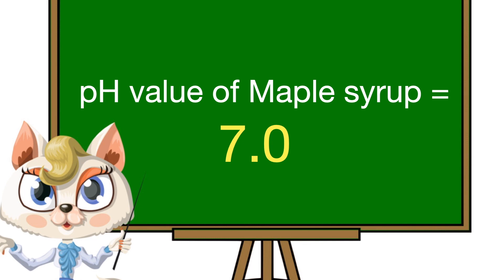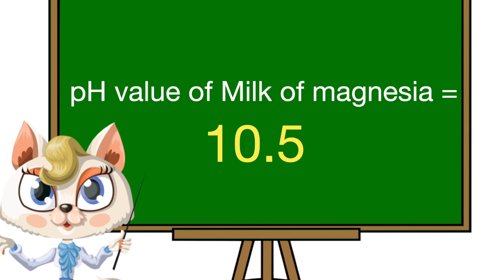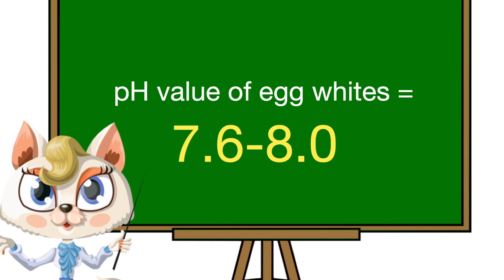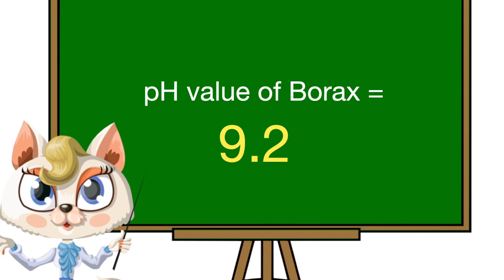The pH value of corn is 6.0 to 6.5. The pH value of butter is 6.1 to 6.4. The pH value of maple syrup is 7.0. The pH value of milk of magnesia is 10.5. The pH value of laundry ammonia or bleach is 11.0. The pH value of egg whites is 7.6 to 8.0. The pH value of borax is 9.2.